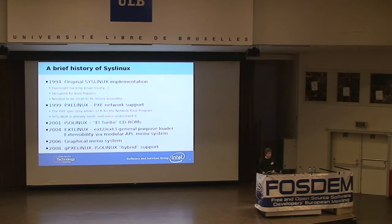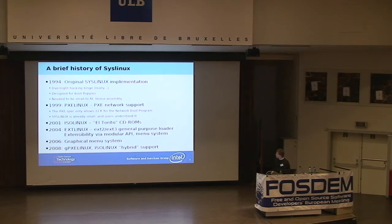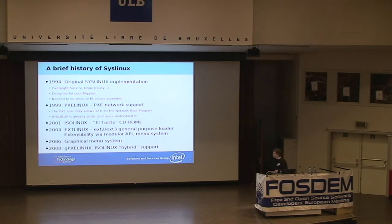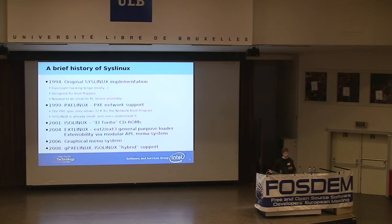In 2004, I apparently did quite a lot of work, because that's also when the modular API and menu system were first written. In 2006, people said they'd like the menu system but it wasn't flashy enough, so eventually: fancy graphics. In 2008, GPXELinux and ISOLinux hybrid support came — that's the ISO image that also works on a USB key.